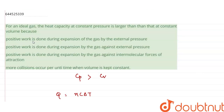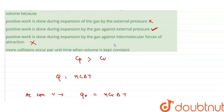Checking the options: The first option — positive work is done during expansion by the external pressure — is not correct. The second option — positive work is done during expansion by the gas against the external pressure — is correct. The third option mentions intermolecular forces, but for an ideal gas intermolecular forces are negligible, so it is incorrect. The fourth option about collisions at constant volume is also not relevant here. The correct answer is option two.